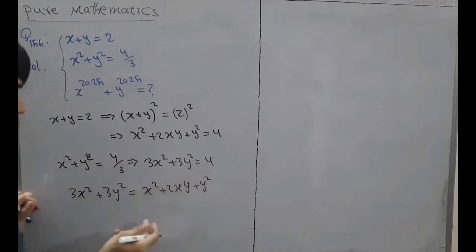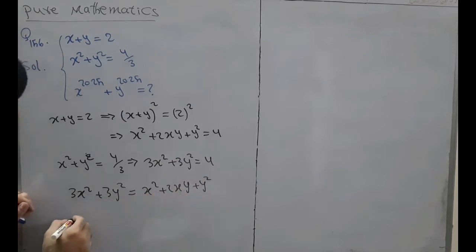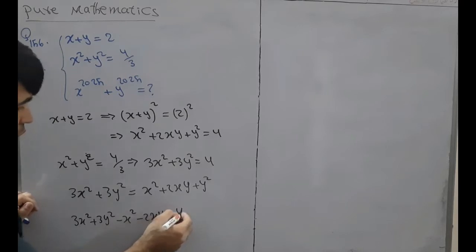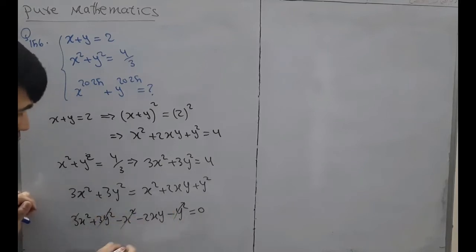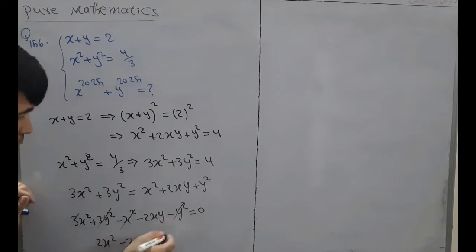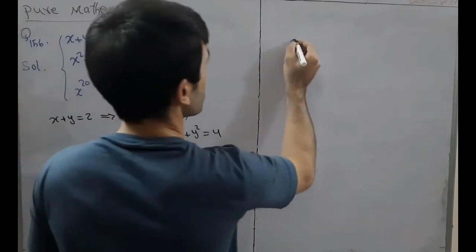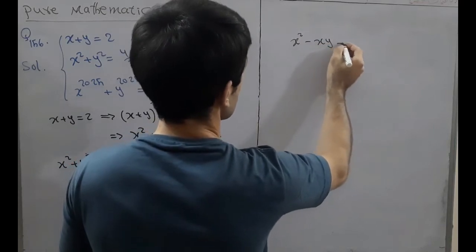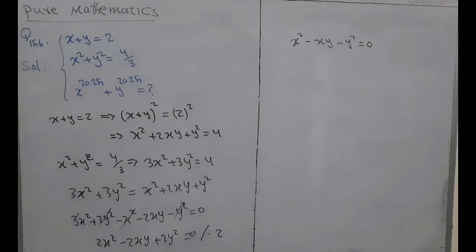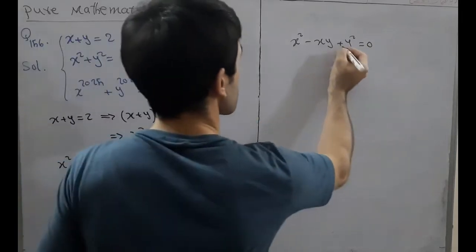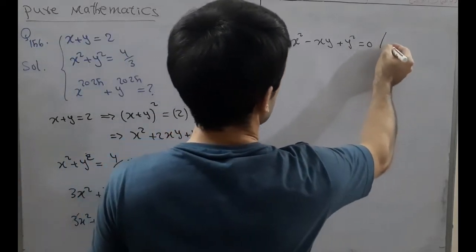Bringing all terms to the left side: 3x squared plus 3y squared minus x squared minus 2xy minus y squared equals 0, which simplifies to 2x squared minus 2xy plus 2y squared equals 0. Dividing both sides by 2, we get x squared minus xy plus y squared equals 0.